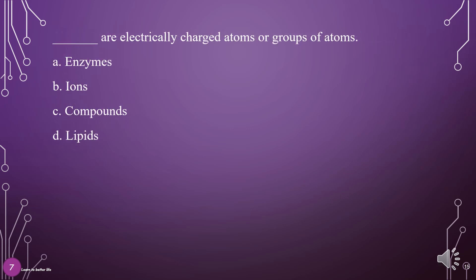What are electrically charged atoms or groups of atoms? A. Enzymes, B. Ions, C. Compounds, D. Lipids. The answer is B: Ions.